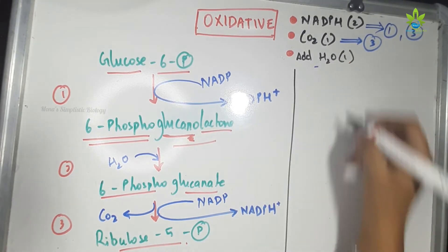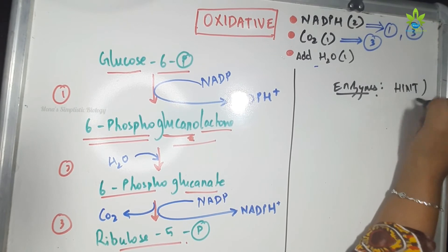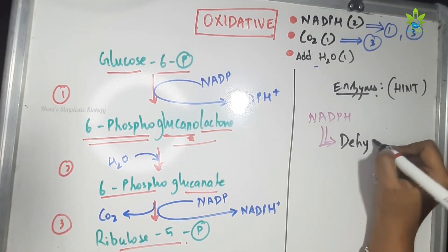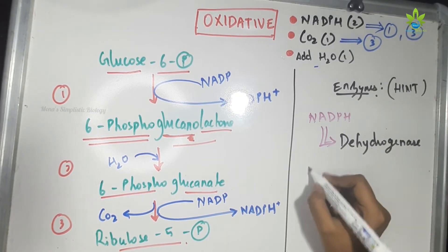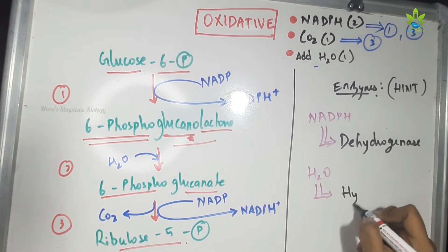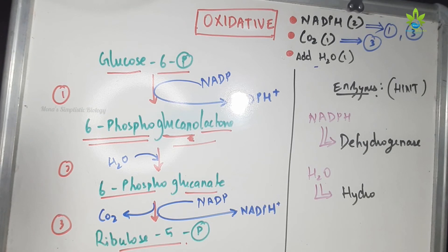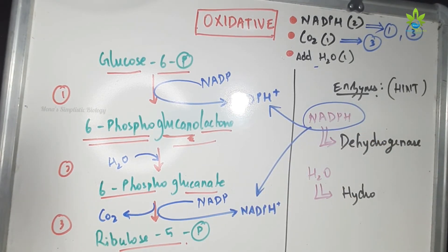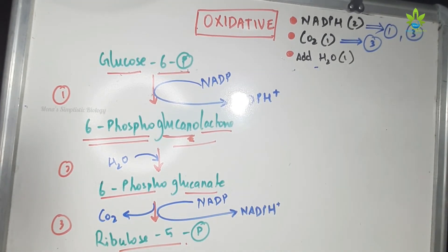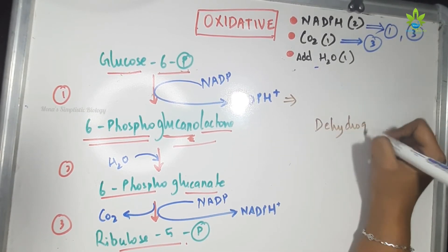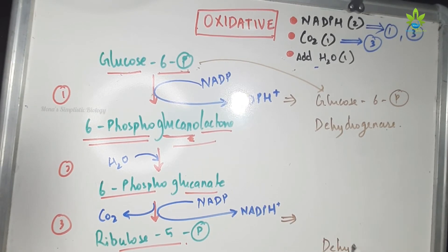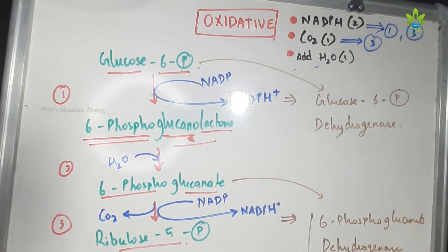Now let's look at the enzymes involved in these three reactions. There are three enzymes for three reactions. A hint: wherever NADPH is present, the enzyme name contains 'dehydrogenase'. So the first reaction involves glucose-6-phosphate dehydrogenase, as NADPH is produced there. This enzyme is called glucose-6-phosphate dehydrogenase.